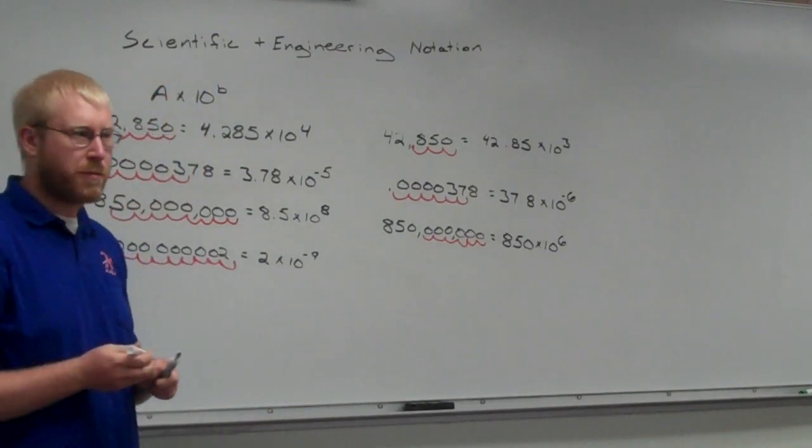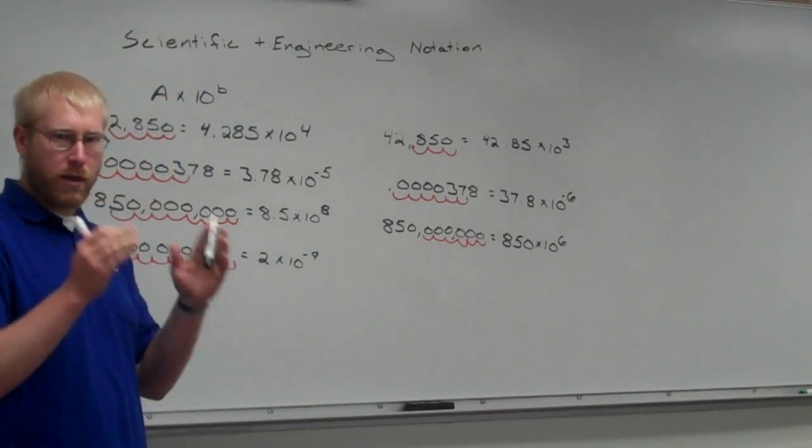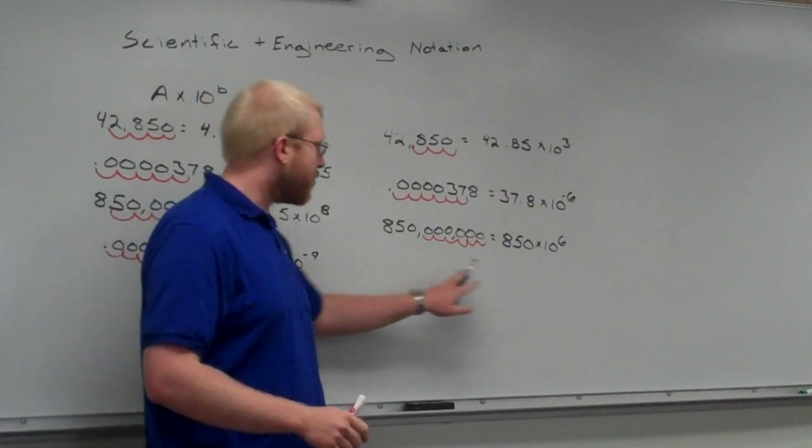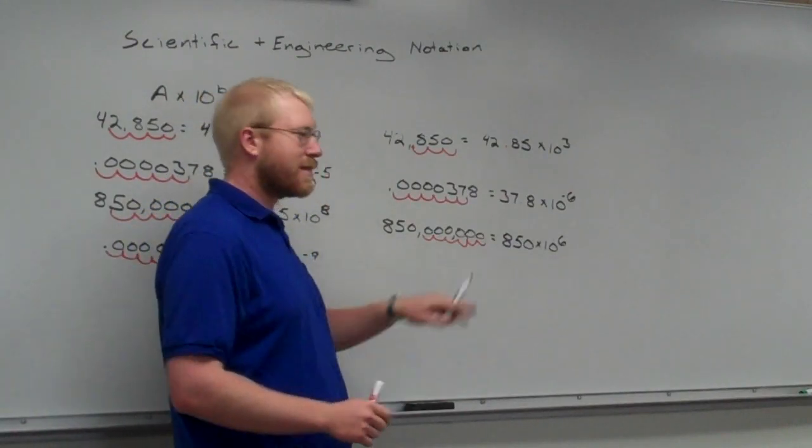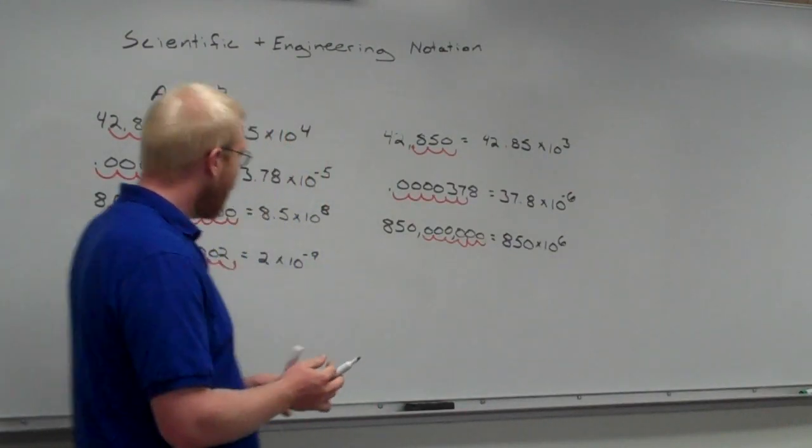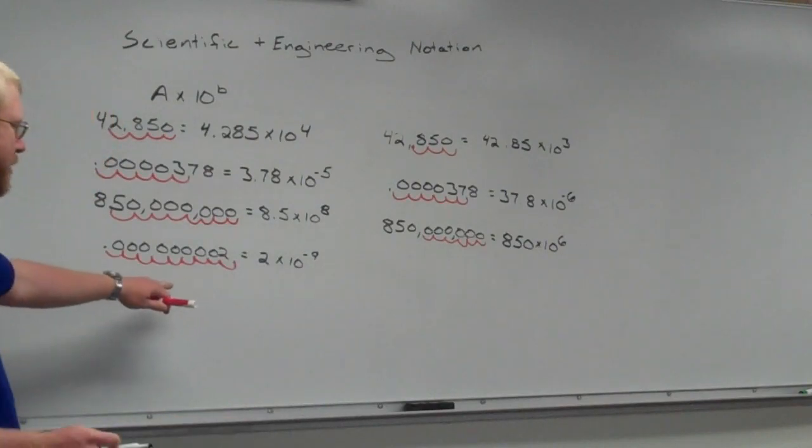They had 3 digits. We can have 1 to 3 digits in front of the decimal place. So, they said, oh, I'm between 1 and 3. I'm good. I've got 850 times 10 to the 6th. Because we moved to 6 places. This one's going to actually end up exactly the same, right?